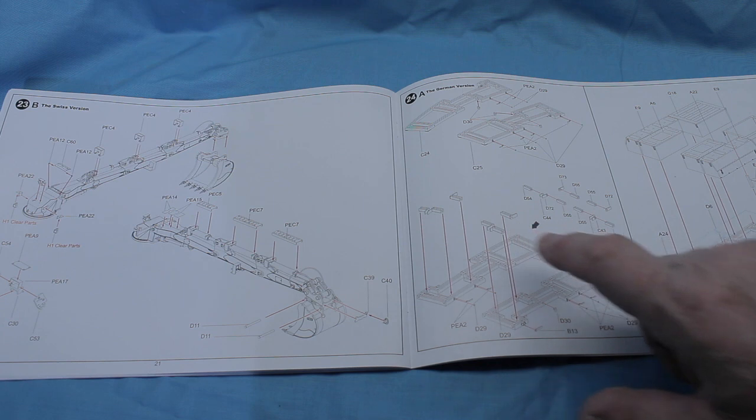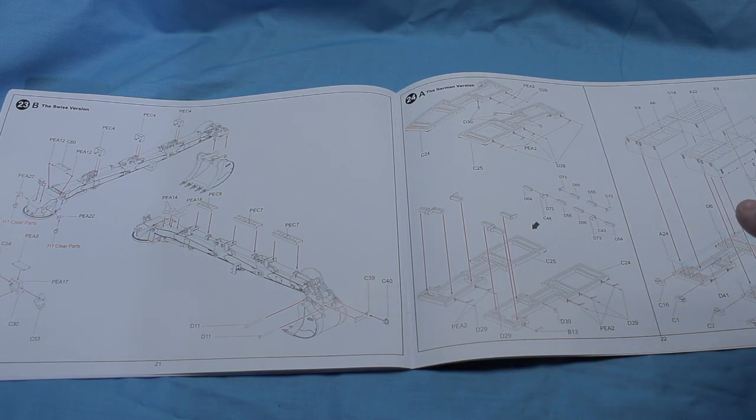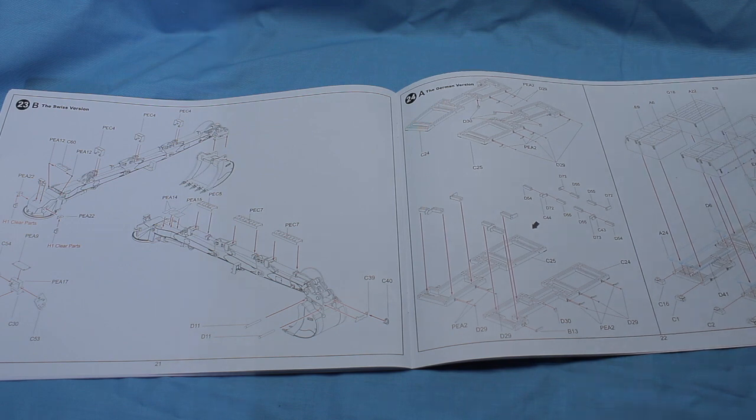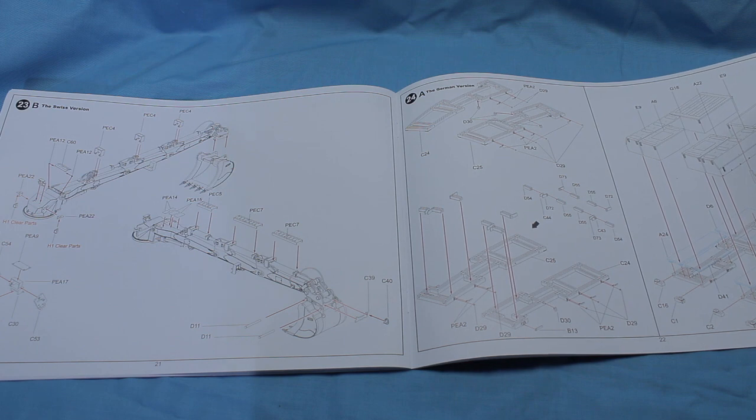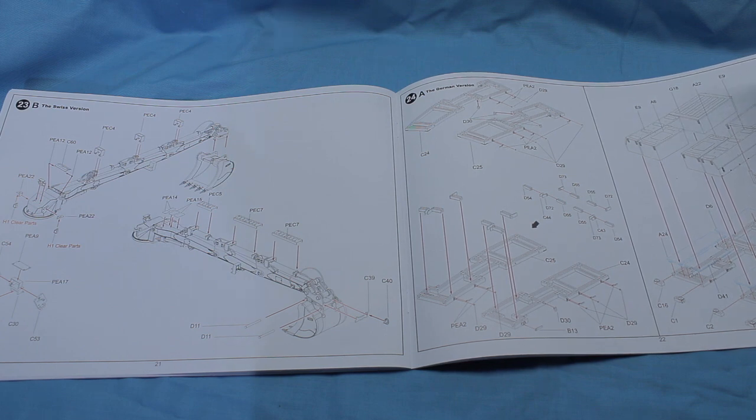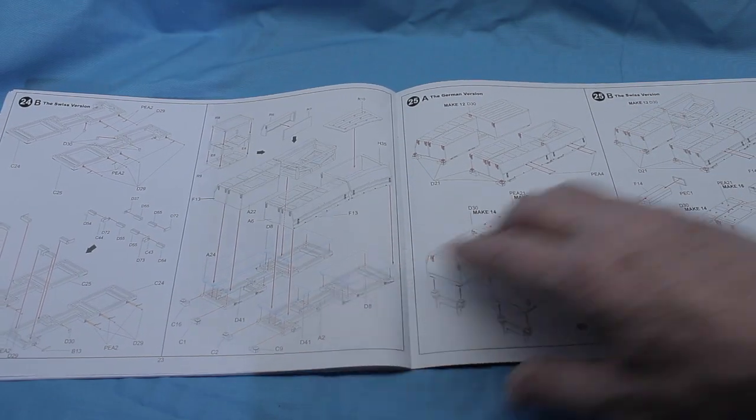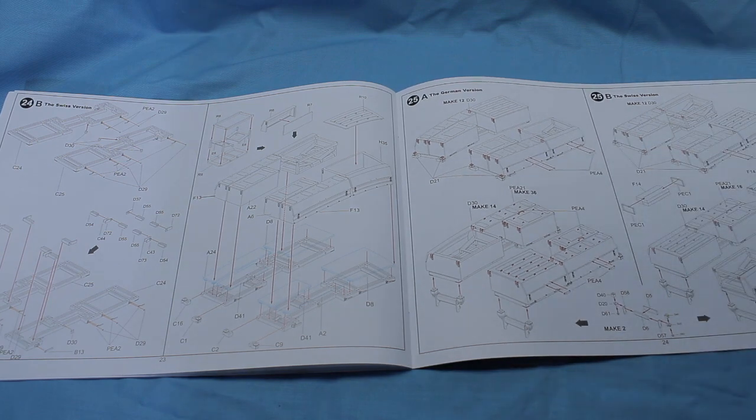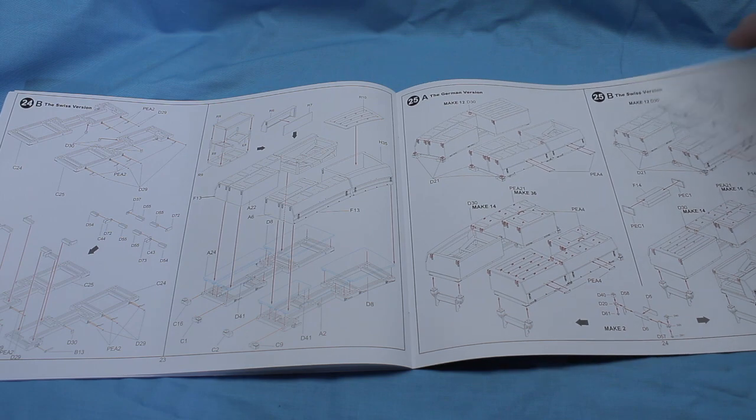Then you have, going through the storage rack that sits on the back of it, you have two different versions. You have a Swiss version and the German version. Now, they have a storage rack here, which is open. And I've seen in the pictures something that looks similar to like a mixer, cement mixer that sits back there. I'm not sure what it is. I haven't figured it out yet, but I'm still researching that. But they have that mount set up here. And then on the German version, it's on this side. The Swiss version, it's on the opposite side. Who knows what will actually be done when the Germans actually get the vehicles and deployed.